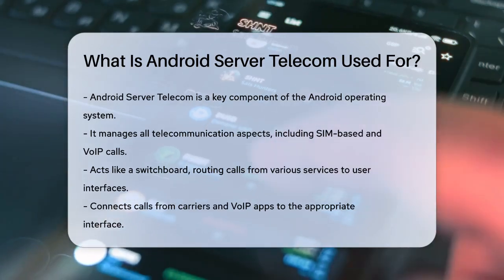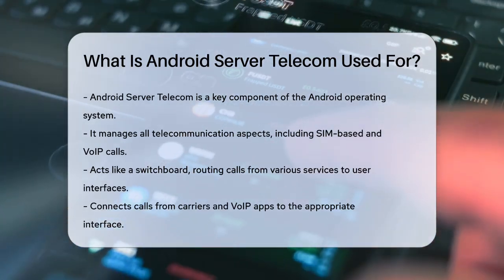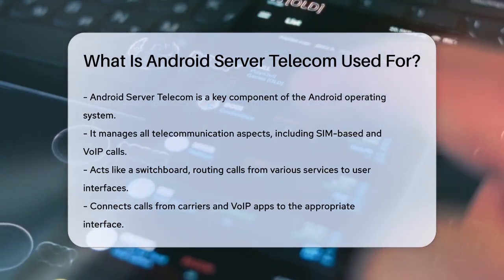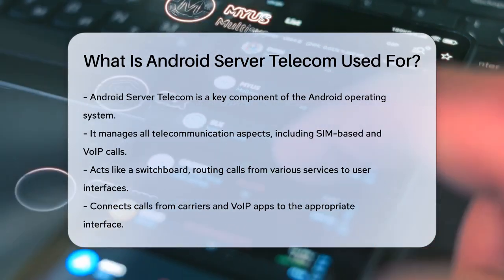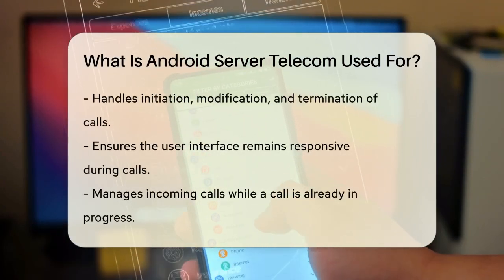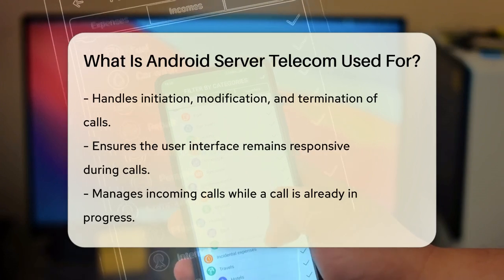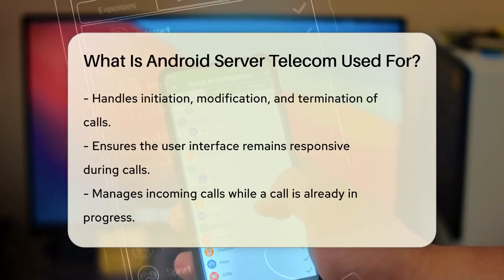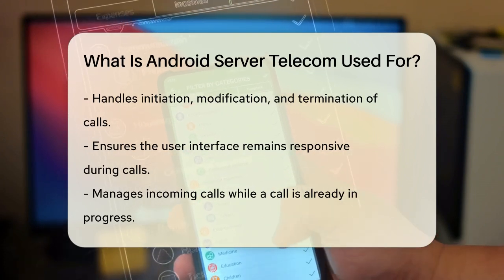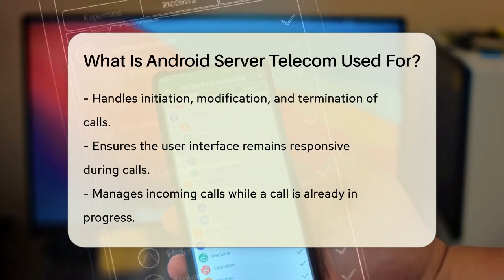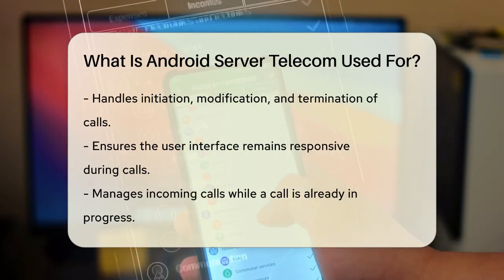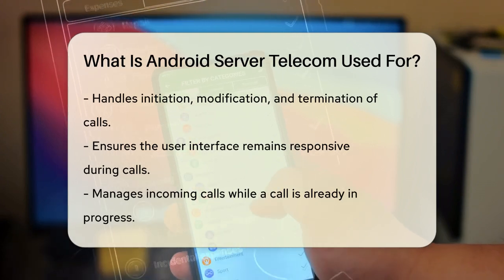Imagine your device as a switchboard. Android Server Telecom acts as this switchboard, routing calls from various connection services to the user interfaces provided by in-call service implementations. This means it connects calls from different sources, such as your carrier or a VoIP app, to the right user interface where you can interact with them. When you make or receive a call, Android Server Telecom handles the initiation, modification, and termination of that call, ensuring the user interface is responsive and functional.